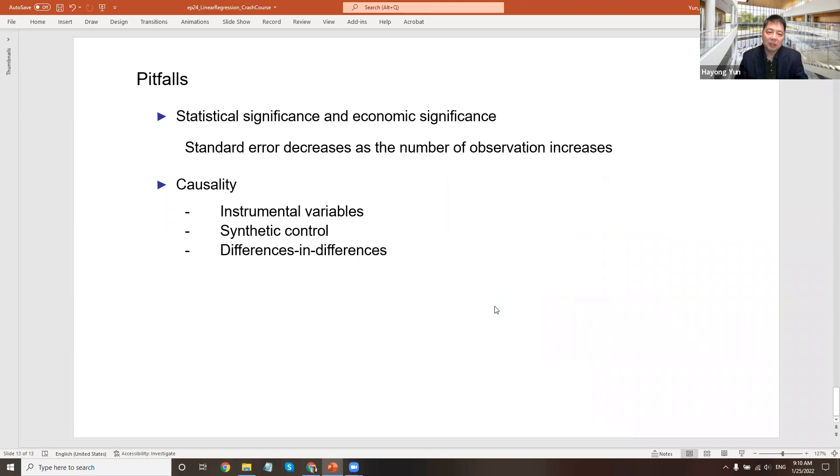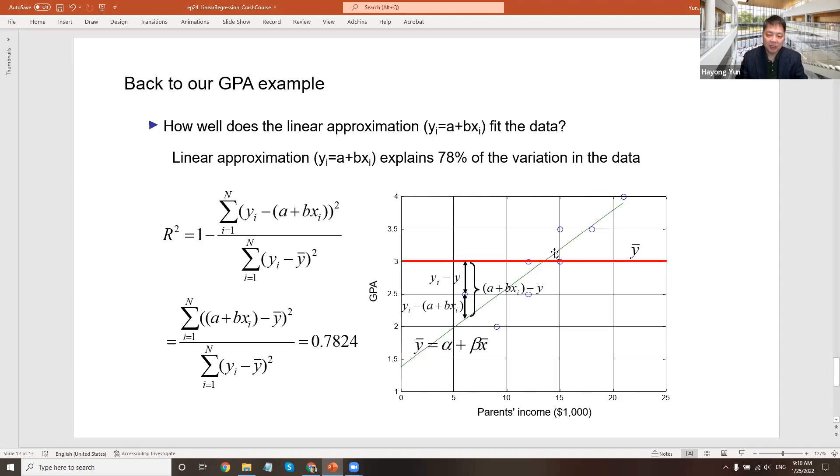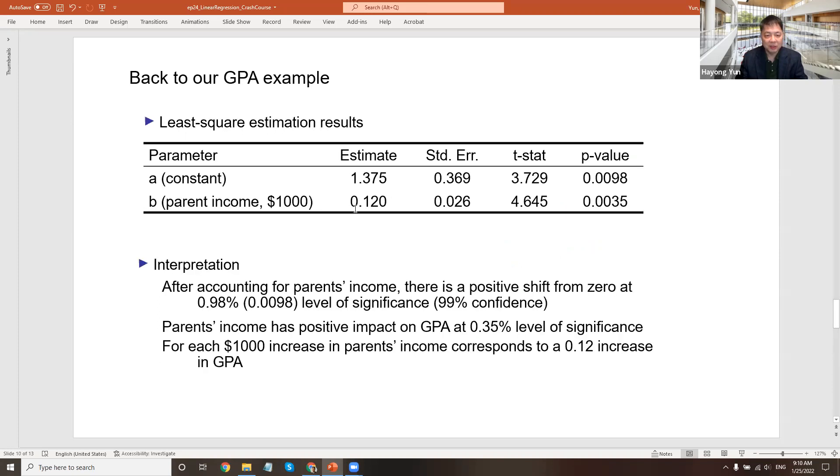There are some cautions that I want to give with linear regression, as useful as it is. The first thing is that statistical significance and economic significance - you could have a linear regression that has very superb t-statistics. For example, the parent income right now is 0.12 per thousand dollar increase. But what if the estimate came out to be like this? The ratio of this divided by the standard error - this is the estimated standard error - the t-statistics is still 4.6.